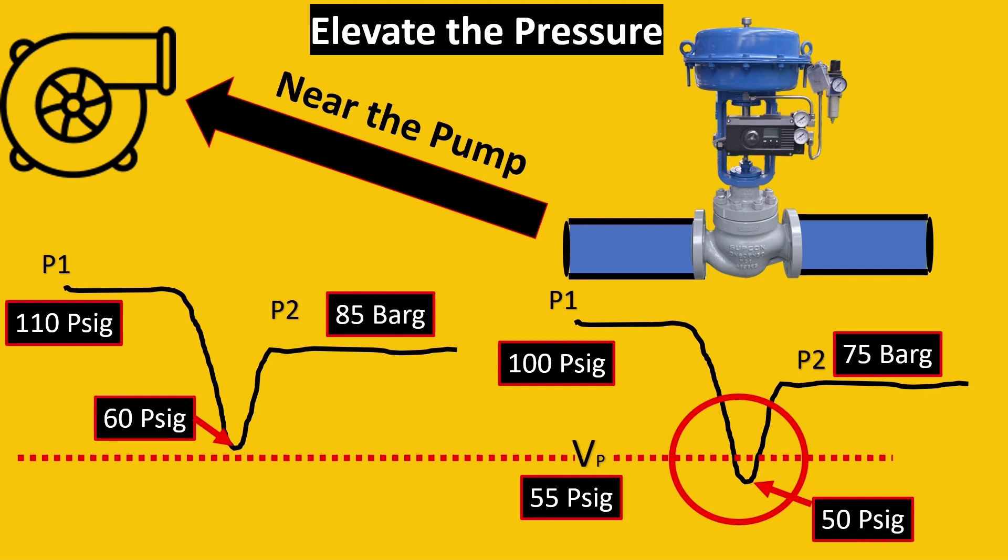The amazing thing is, look at the vapor pressure curve - it was 55 psig. So it is going above, and we have already saved cavitation without adding anything, just moving the control valve which we have to install anyway. Isn't it amazing? If you compare both areas, you would see that even though the pressure drop is the same, cavitation is not happening in the second case while it's happening in the first case.